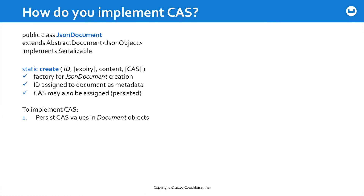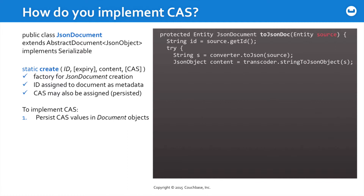To implement CAS, you need to use document objects and appropriate operations. In your code, you may have some local entity, and you use that to create the JSON document. The JSON document manages CAS values in its own metadata, but for other purposes you may need to be serializing and deserializing from local domain objects to and from the JSON document format. That means in your own entities, you need to be persisting the CAS value. As you create the JSON document, if you have a CAS value persisted in a local object, you can get that value out and pass it as you create the JSON document.